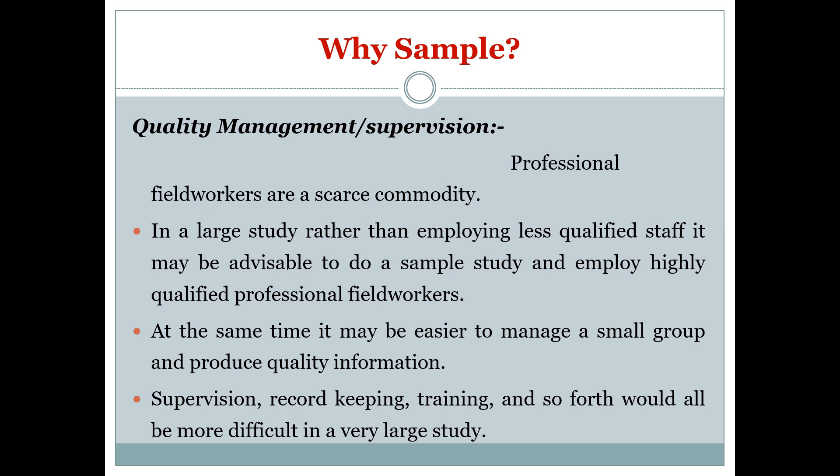Quality management and supervision are also reasons to use sampling. Professional field workers are a scarce commodity; it is difficult to find trained staff. In a large study, rather than employing less qualified staff, it may be advisable to do a sample study and employ highly qualified professional field workers who know how to conduct research. It may also be easier to manage a small group and produce quality information, as record keeping, training, and supervision would all be more difficult in a very large study.